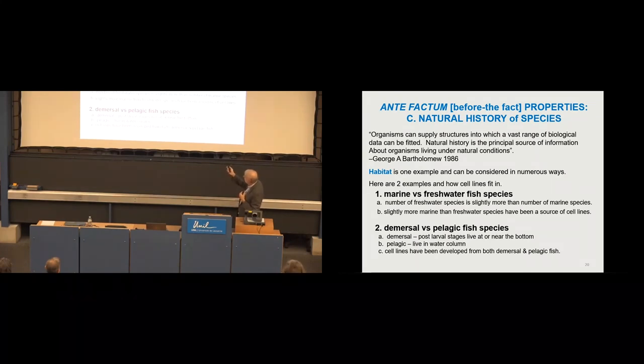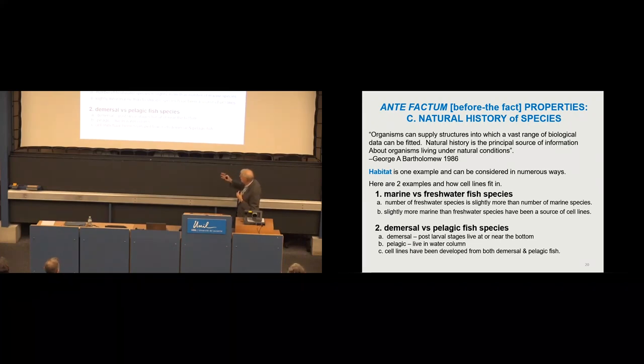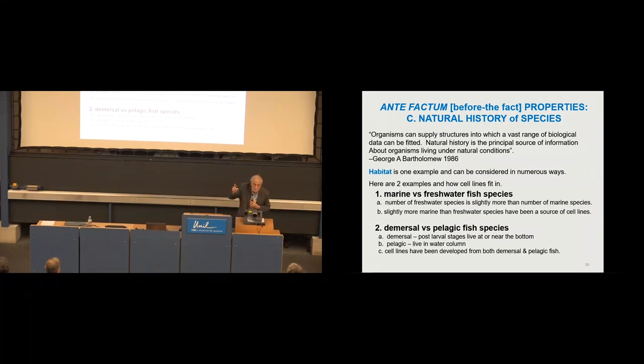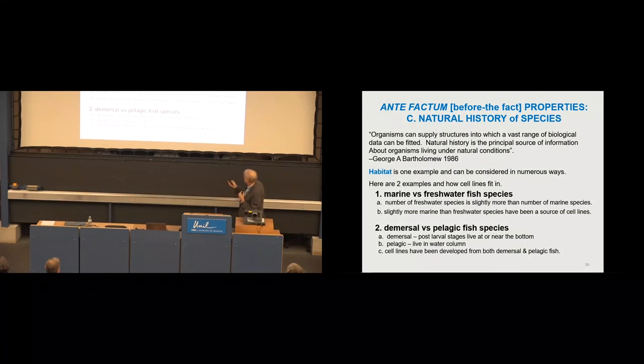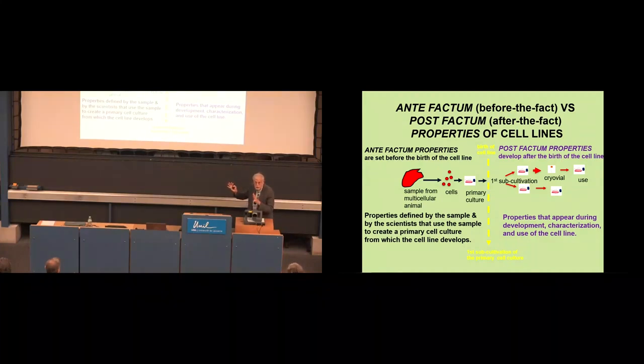So we can have cell lines from marine versus freshwater fish. So there's slightly more freshwater species than marine species. And there used to be most of the cell lines were reported from freshwater fish, but now there's more and more cell lines being developed from marine species. It could be from another habitat criteria: demersal versus pelagic. So demersal means the post-larval stages live at or near the bottom. And then pelagic, they live in the water column. And so cell lines have been developed from both demersal and pelagic fish.